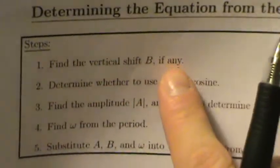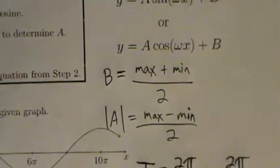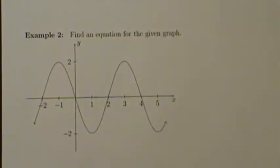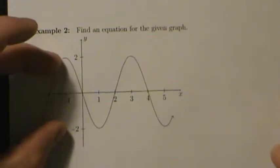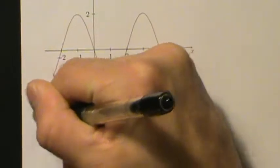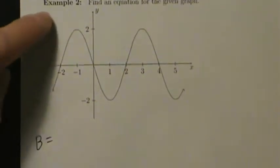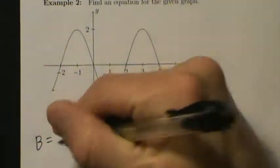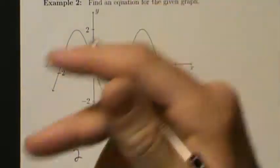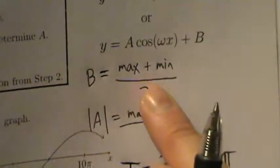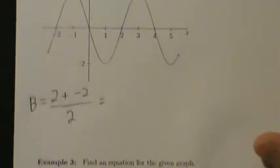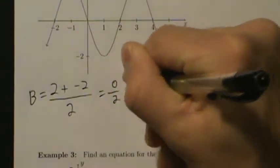Step one: find the vertical shift B, if any. Remember, B is defined as the max value plus the min value divided by two. Here, B equals the max value of two plus the minimum value of negative two, divided by two.